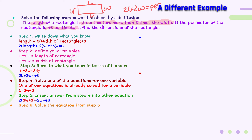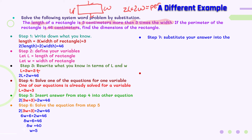Step six: solve the equation from step five. Starting with 2(3W + 3) + 2W = 46, I distribute, combine like terms, subtract 6 from both sides, and divide by 8, giving W equals 5. Step seven: substitute that answer into the equation from step four — L equals 3 times 5 plus 3, which is 15 plus 3, so L equals 18.